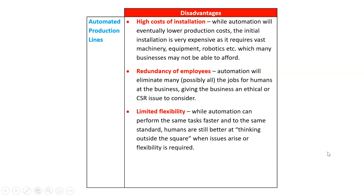And finally, machines are really good, but they're not as smart as humans in terms of flexibility. A machine can't think outside the square — it can only do what it's programmed to do, and that's a very limited range of things. So sometimes when issues arise or flexibility is required, a human is actually preferable to an automated machine.